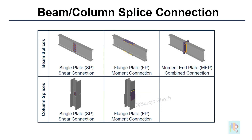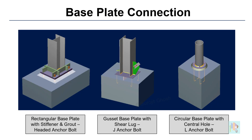Common types of beam and column splice connections are available with single plate, flange plate and moment end plate templates. For base plate connections, we can design either rectangular or circular plates, with or without a central hole, with additional stiffener plates or channels, shear lug, and different types of anchor bolts.